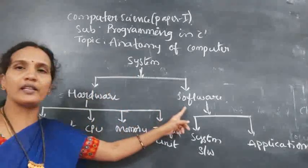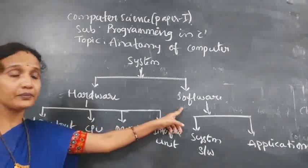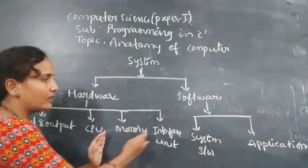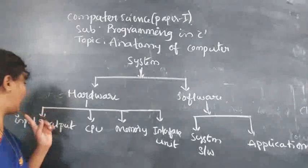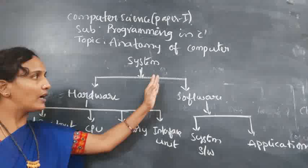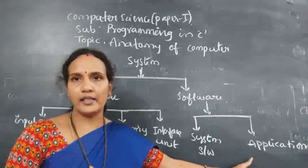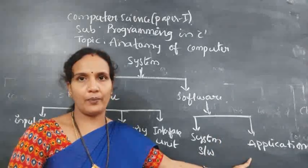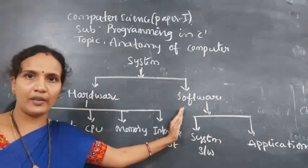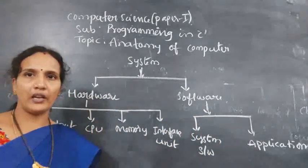In the computer system, there are two units: one is hardware and the second one is software. Hardware is divided into input and output devices, CPU, memory, and interface unit. I will explain all of these.